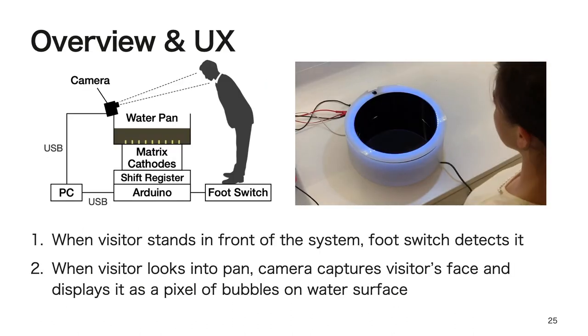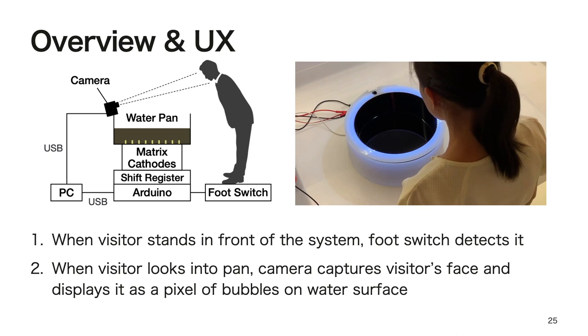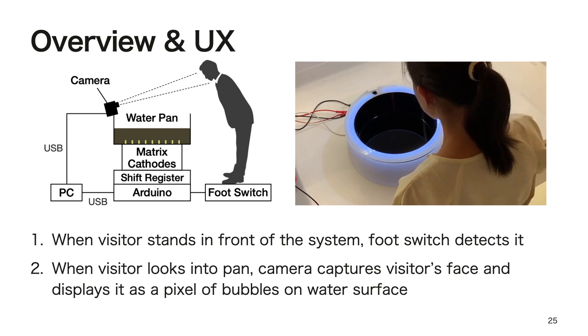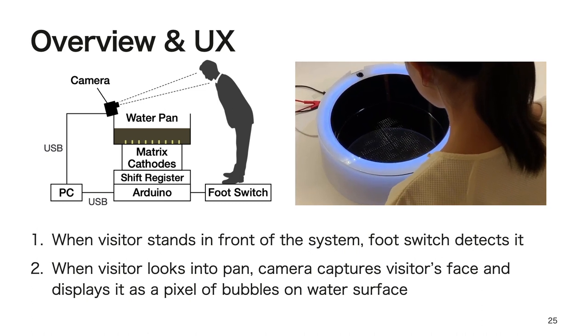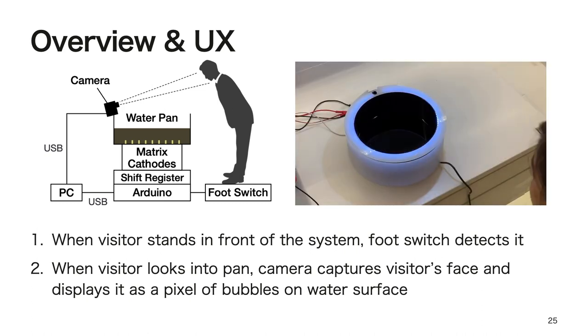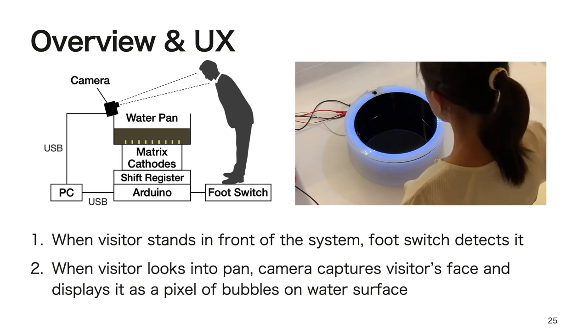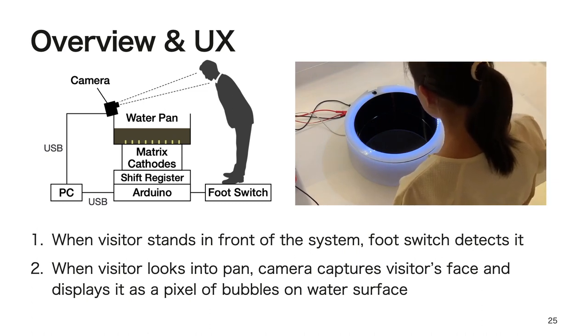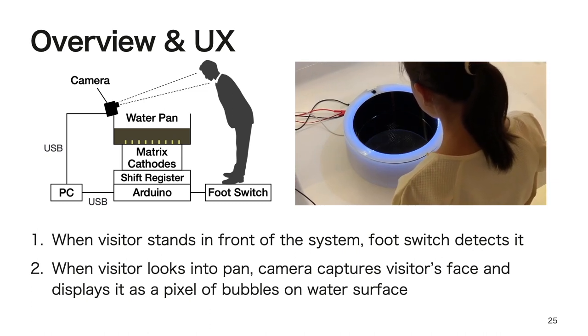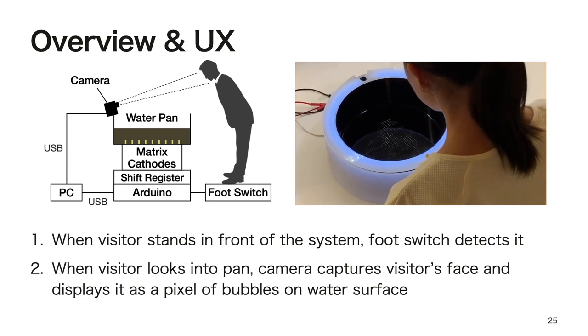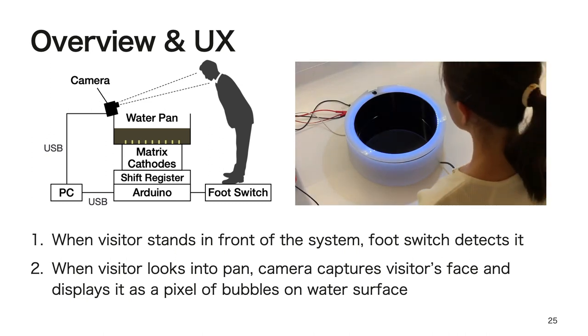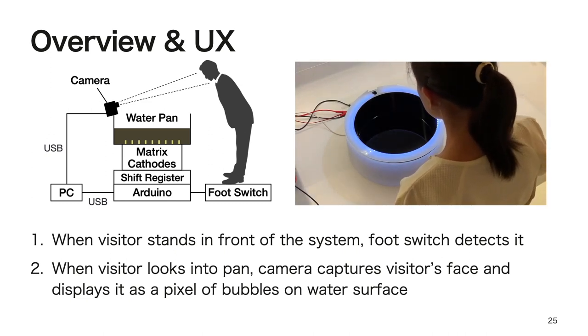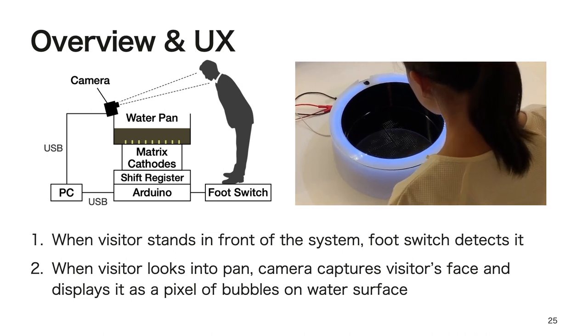As for the system configuration, the system is comprised of a water pan with an Arduino, a foot switch, a USB camera, and a PC running a processing program. The water pan is filled with water darkened with instant coffee powder. As for the user experience, firstly, when a visitor stands in front of the system, the foot switch detects it. Next, when a visitor looks into the pan, the camera captures the visitor's face and displays it as a picture of bubbles on the water surface.